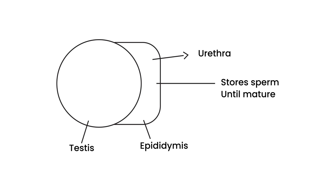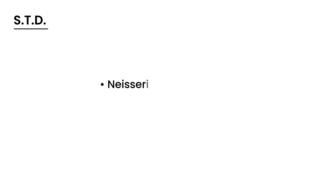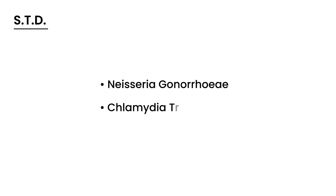Unfortunately, sometimes during sexual intercourse, you can contract a pathogen which can cause retrograde infection of the epididymis through the urethra. So epididymitis is essentially a sexually transmitted disease. The two most common pathogens in the etiology are Neisseria gonorrhea and Chlamydia trachomatis — remember these two as the main players.